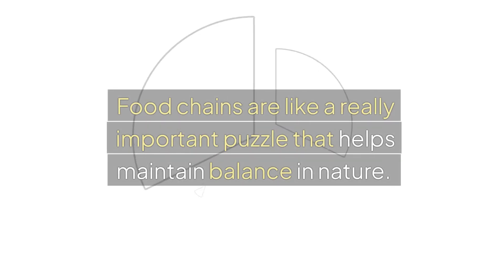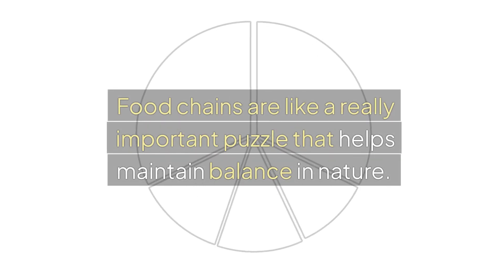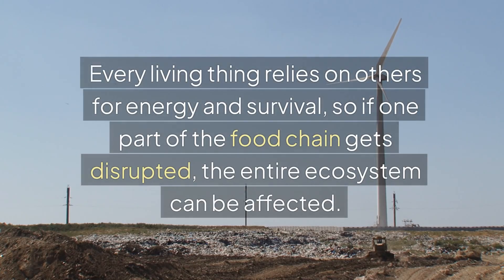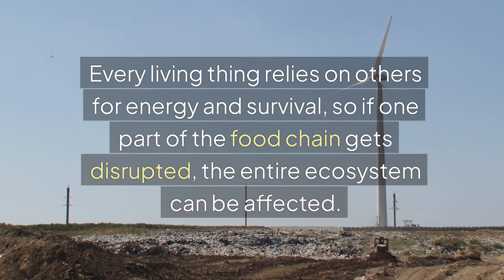Food chains are like a really important puzzle that helps maintain balance in nature. Every living thing relies on others for energy and survival, so if one part of the food chain gets disrupted, the entire ecosystem can be affected.